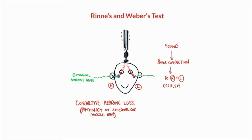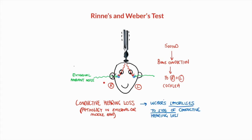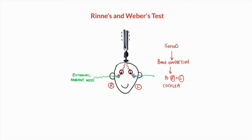On the affected side, the cochlea only picks up signals carried through the bone and is not masked by any external ambient noise, because sound cannot pass through the blocked external and middle ear. On the normal side, however, the bone-conducted sound is still masked by external ambient noise passing through the external and middle ear. Thus in Weber's test, if a patient has a conductive hearing loss — whether from wax, otitis externa, acute otitis media, glue ear, or otosclerosis — the patient will lateralize the sound towards the side of the pathology.